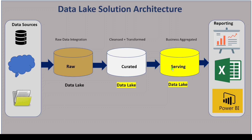The serving layer — in some projects they used to call this the business layer or target layer — but generally we will have three different layers. In the raw layer, one of the ETL tools might pull the data from the data sources and dump the raw data into the raw layer. It could be in one of the big data file formats — it could be CSV, JSON, Parquet, or Avro. The data would be dumped into the raw layer. This is mainly used only for sourcing and storage purposes.